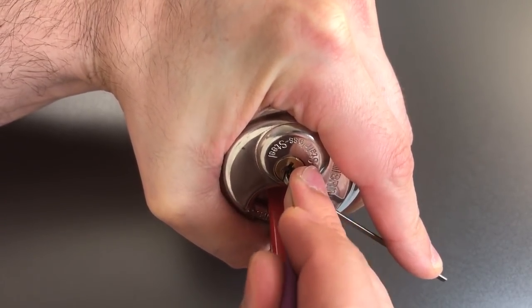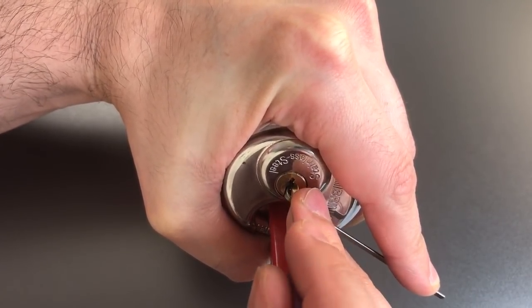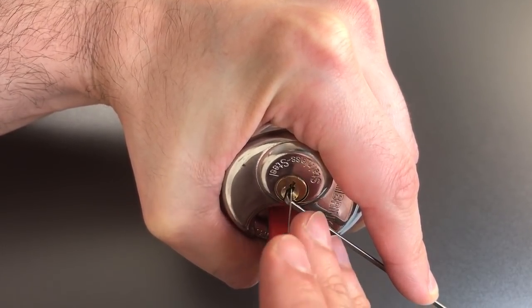Okay one is loose, two I got a little click out of, little click out of three, something out of four, and a big click out of five.